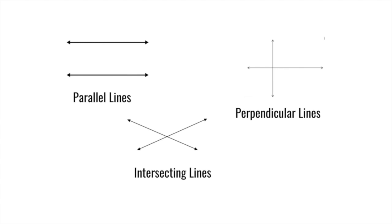Perpendicular lines, the next one we will talk about, form four right angles. So you will see perfect right angles where those lines meet. They are a special type of intersecting lines. Intersecting lines are lines that cross, but do not necessarily have to make four right angles.